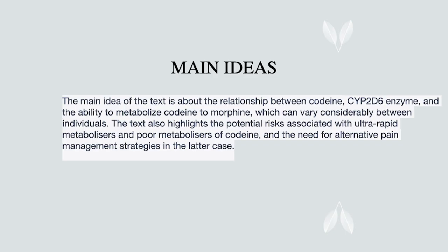The main idea of the text is about the relationship between codeine, the CYP2D6 enzyme, and the ability to metabolize codeine to morphine, which can vary considerably between individuals. The text also highlights the potential risks associated with ultra rapid metabolizers and poor metabolizers of codeine, and the need for alternative pain management strategies in the latter case.